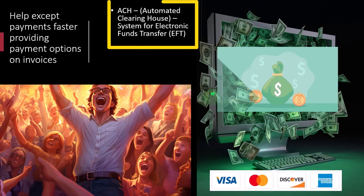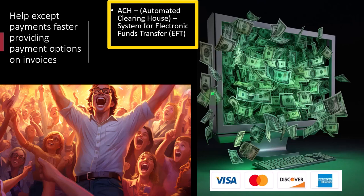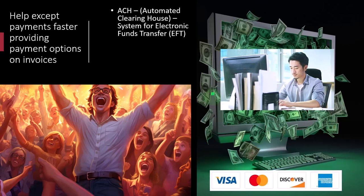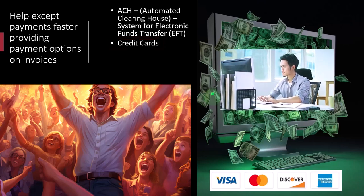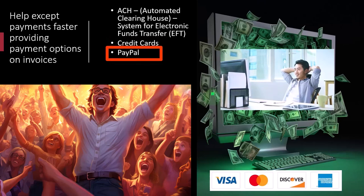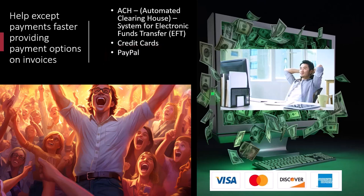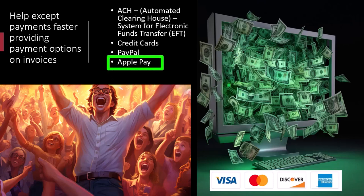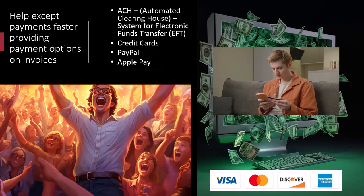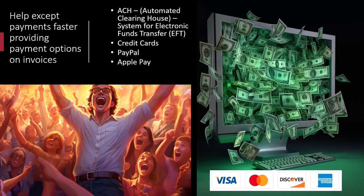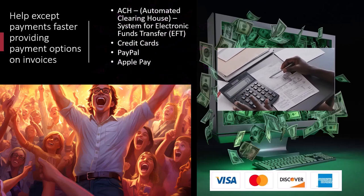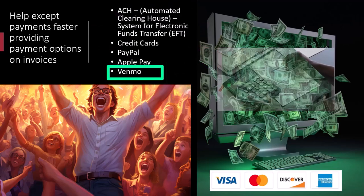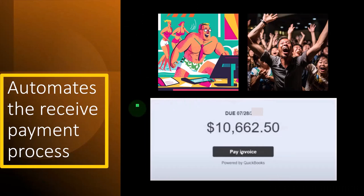Specific payment options available include ACH — the Automated Clearinghouse system used for electronic funds transfers from a bank account — as well as all major credit cards: Visa, Mastercard, Discover, and American Express. PayPal is also an option, which some people use like a checking account. Apple Pay is supported for customers comfortable with mobile payments. Venmo is also available. Having this variety of options makes it more likely invoices will be paid quickly, improving accounts receivable and cash flow.